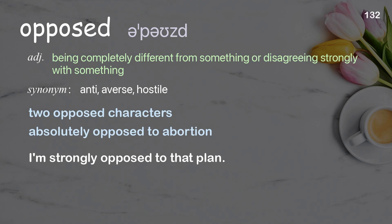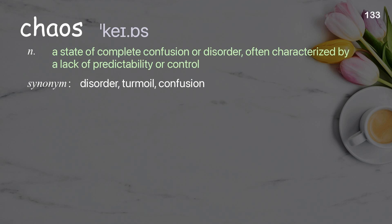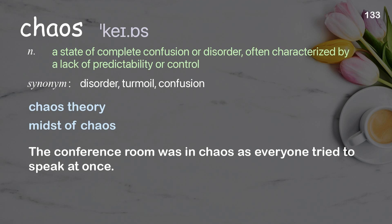Chaos: a state of complete confusion or disorder, often characterized by a lack of predictability or control. Examples: chaos theory, midst of chaos. The conference room was in chaos as everyone tried to speak at once.